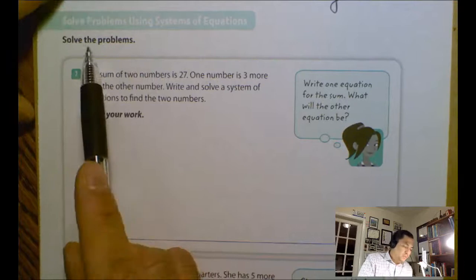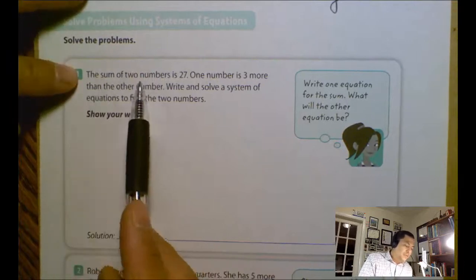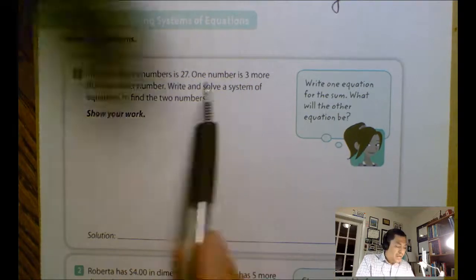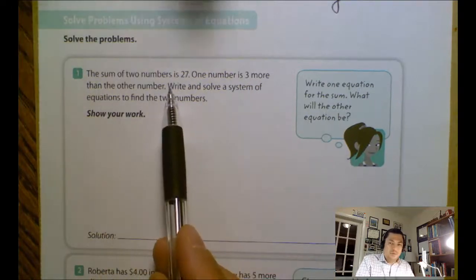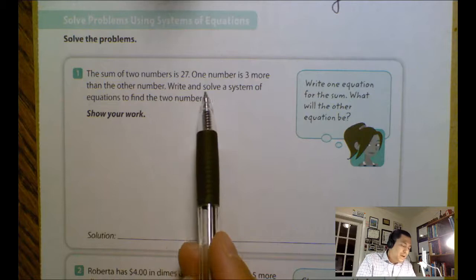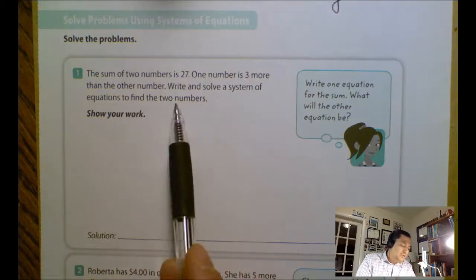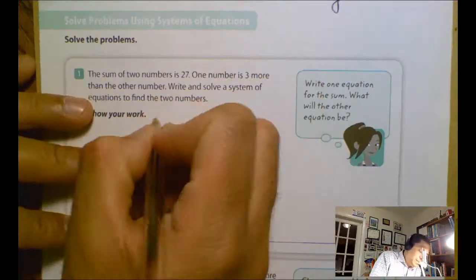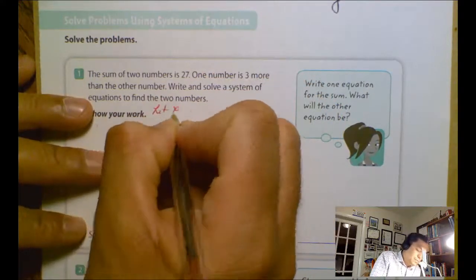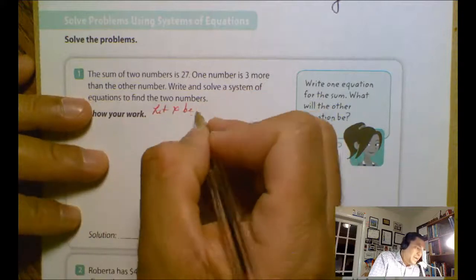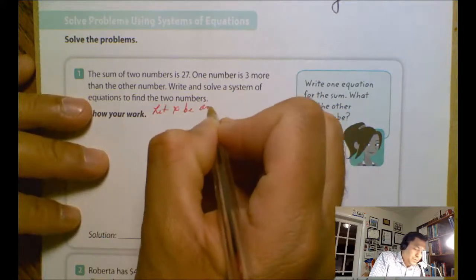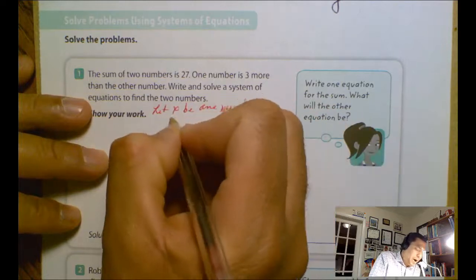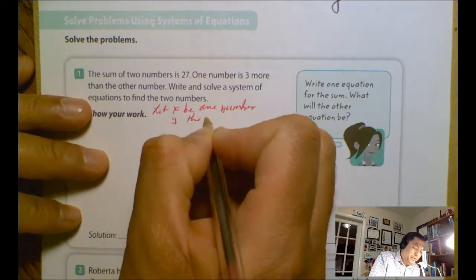We have problem number one: the sum of two numbers is 27, one number is three more than the other number, which we don't know. Write and solve a system of equations to find the two numbers. I'm going to let x be one number and y the other number.